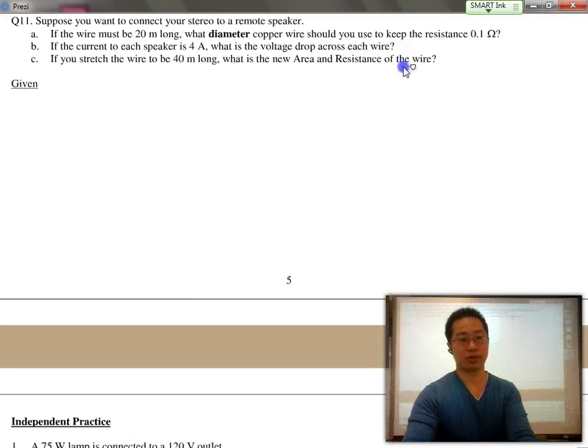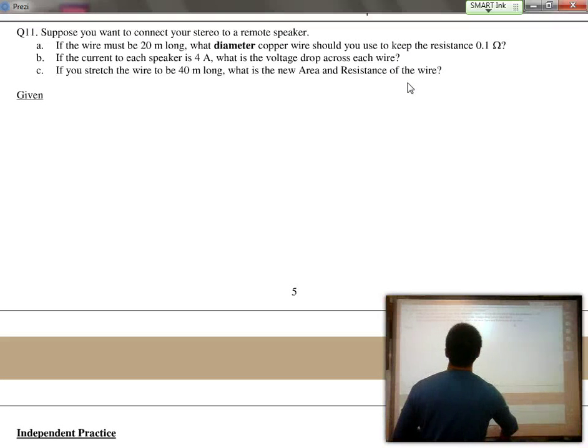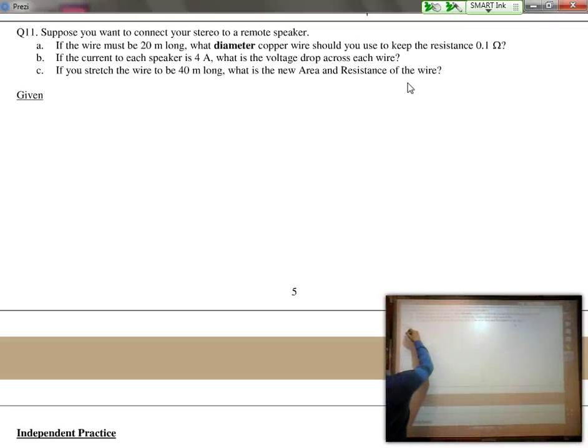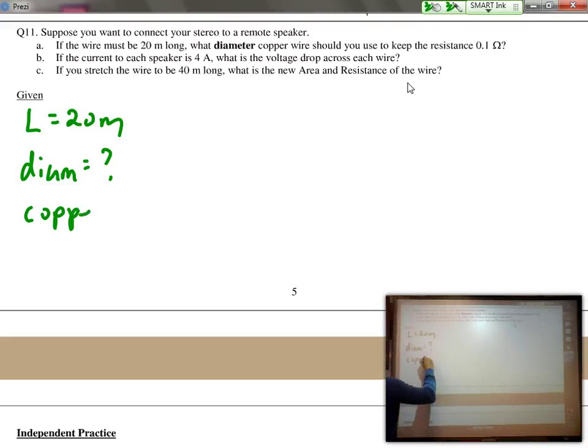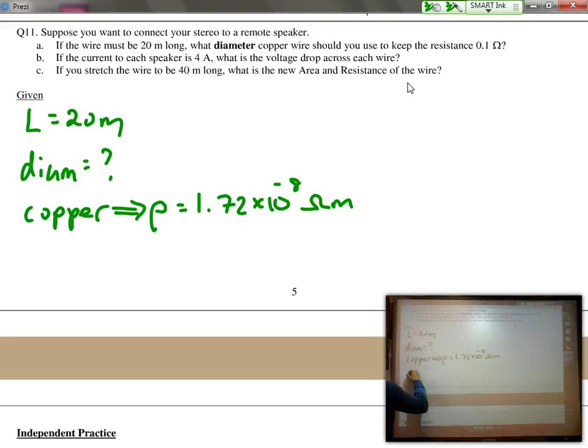Let's do this quick practice question. Suppose you want to connect your stereo to a remote speaker. If your wire must be 20 meters long, what diameter copper wire should we use? They're looking for diameter, so really we need the area. And they mention that's copper. In your textbook, it states that copper has a resistivity of 1.72 times 10 to negative 8 ohm meters.